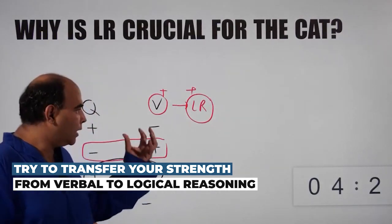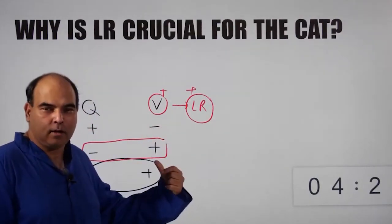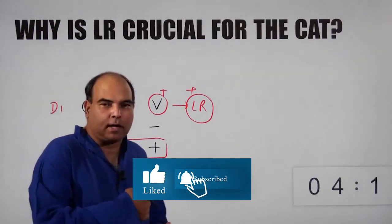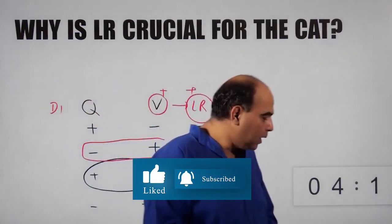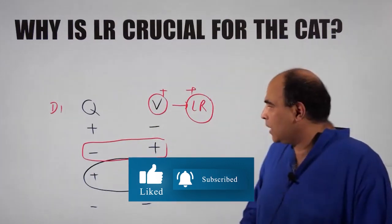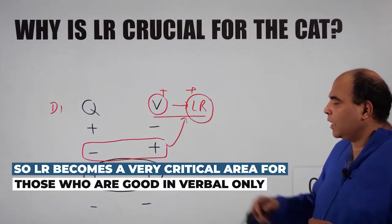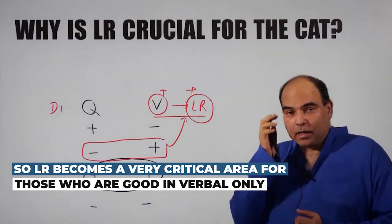The problem solving structure is required there. I've seen a lot of people who could not do quants very well but transited their skills into LR solving. So it becomes very critical for everybody to actually do LR. For these people it becomes extremely critical because it becomes your second area of strength apart from your verbal.